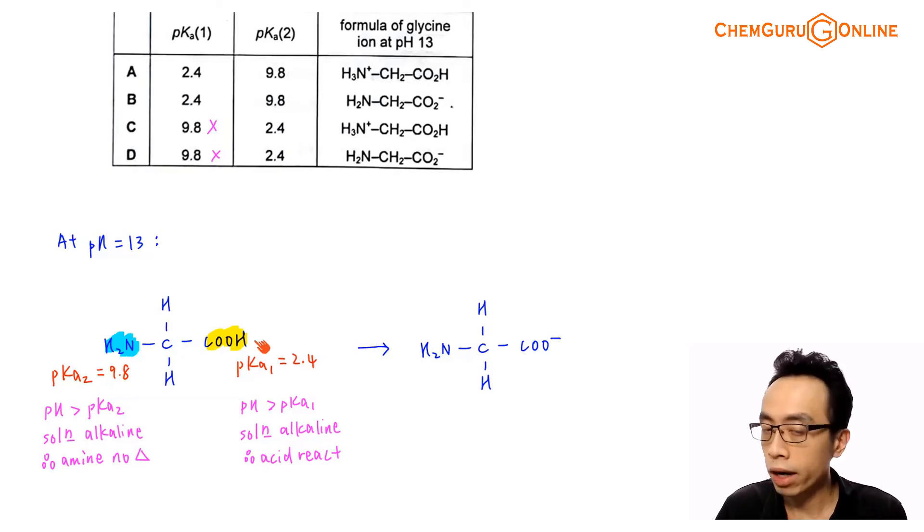If I consider alpha acid, remember pKa1 equals 2.4. If I put this alpha acid into a solution pH 13, pH 13 is greater than the pKa value for your alpha acid, greater than pKa1. This means that the solution is alkaline with respect to your alpha acid. Since we have an acidic functional group, it will respond to the alkaline solution. My acid will be converted to conjugate base. So we would expect COOH to be converted to COO-.